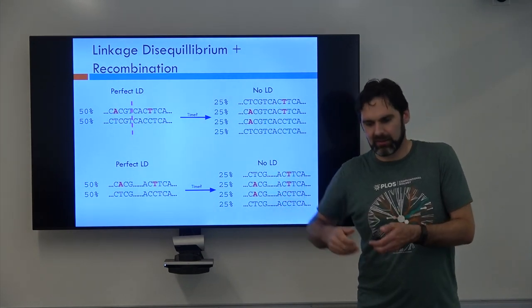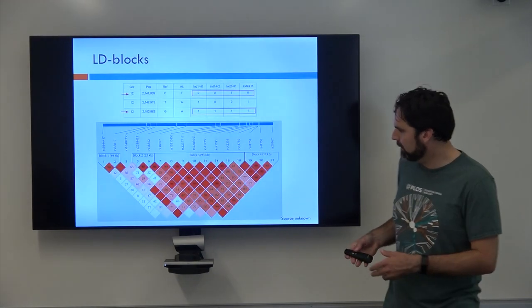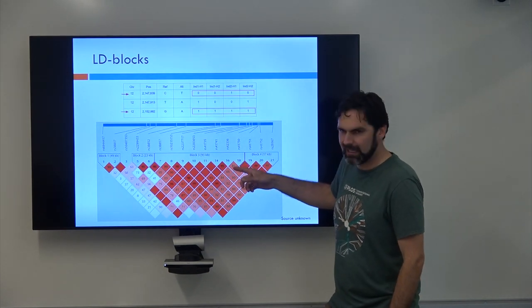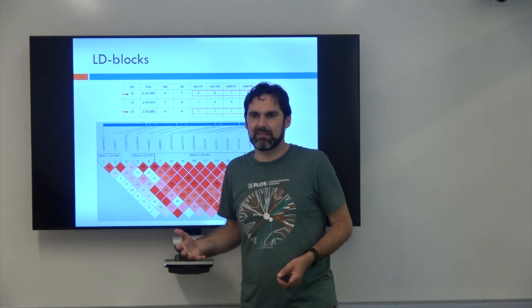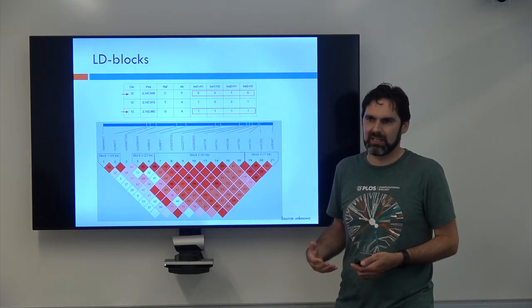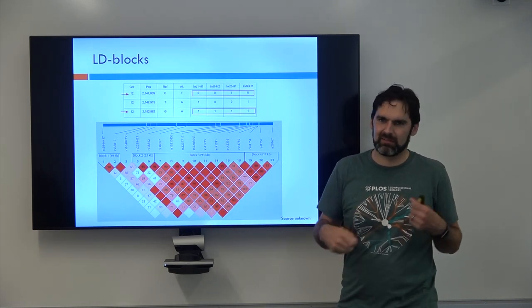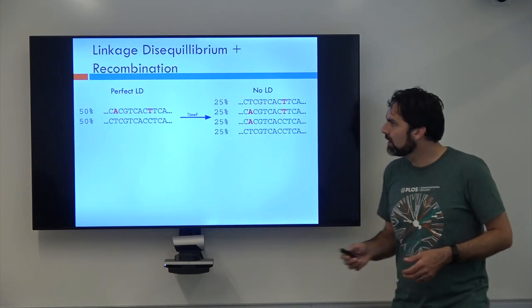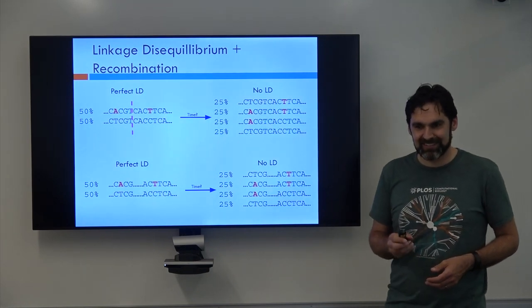And what this means is that the reason we have these LD blocks is because if you look at like this SNP, as you move away from it, things you expect to have less LD with it, simply because there's more opportunities for recombination events. So things on opposite ends of a chromosome probably have no linkage just because of so many opportunities for recombination to occur. And that's it for this module, so thank you very much.